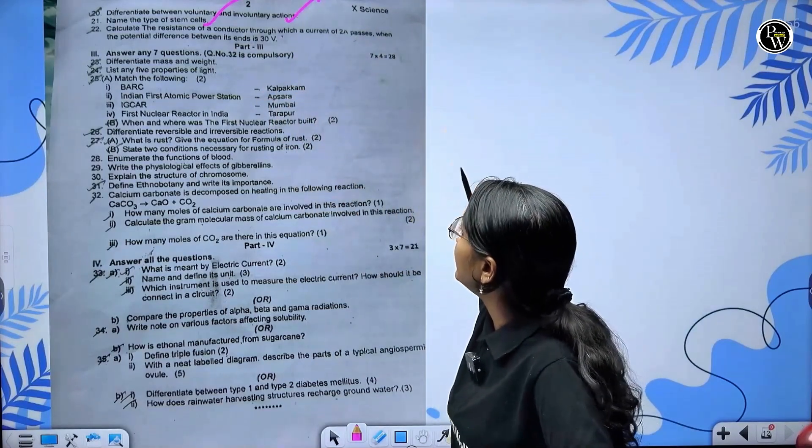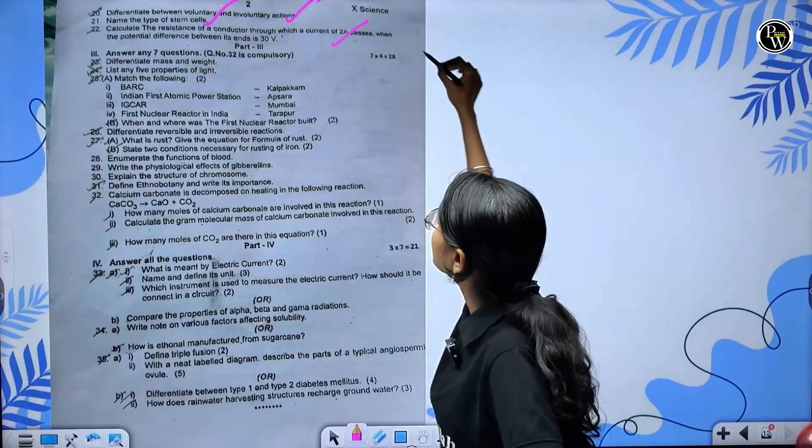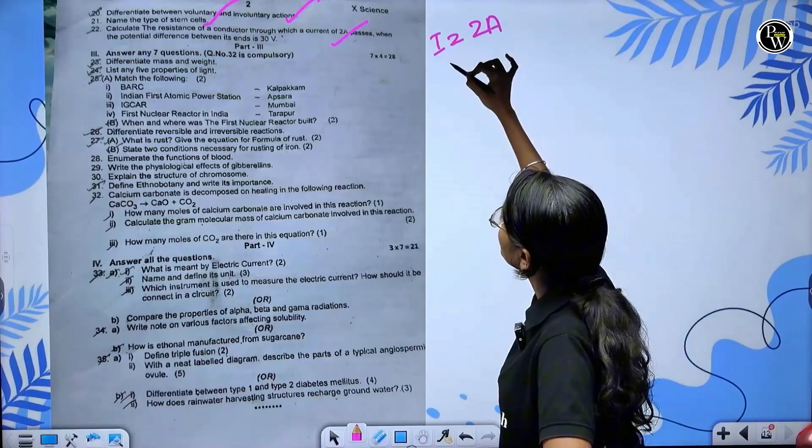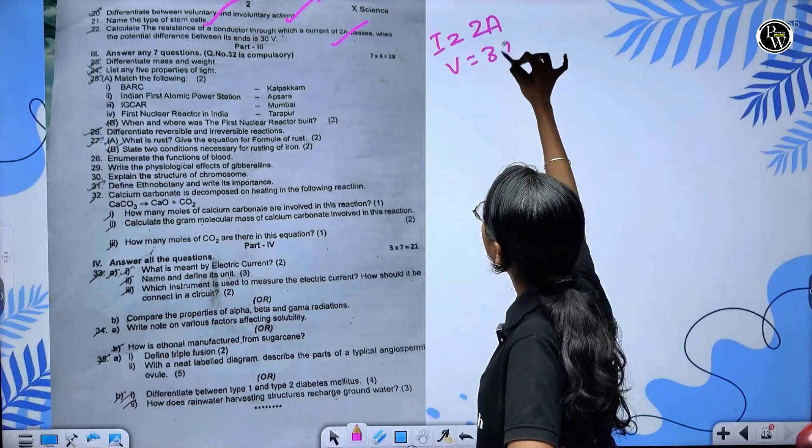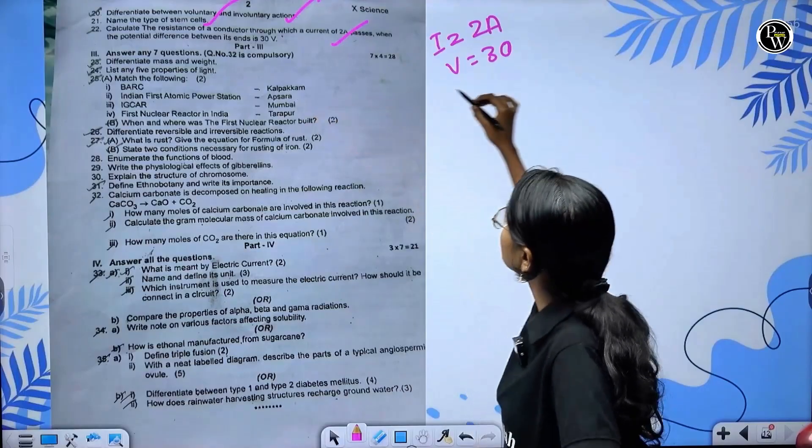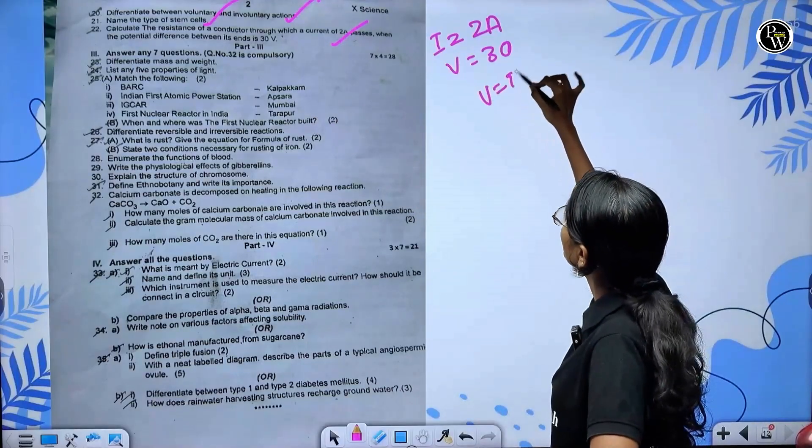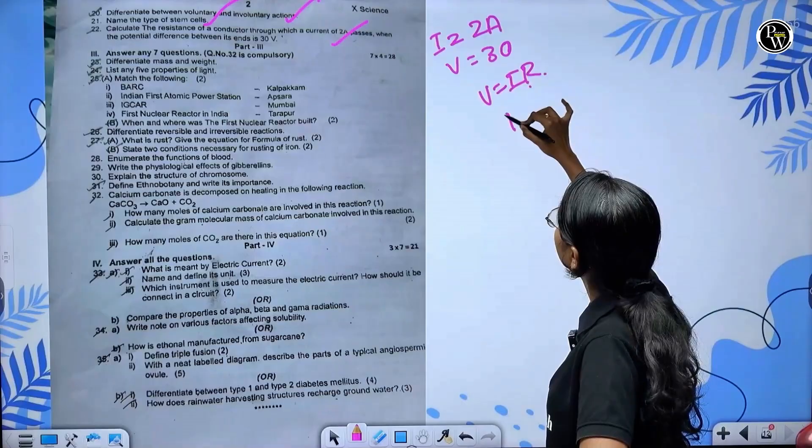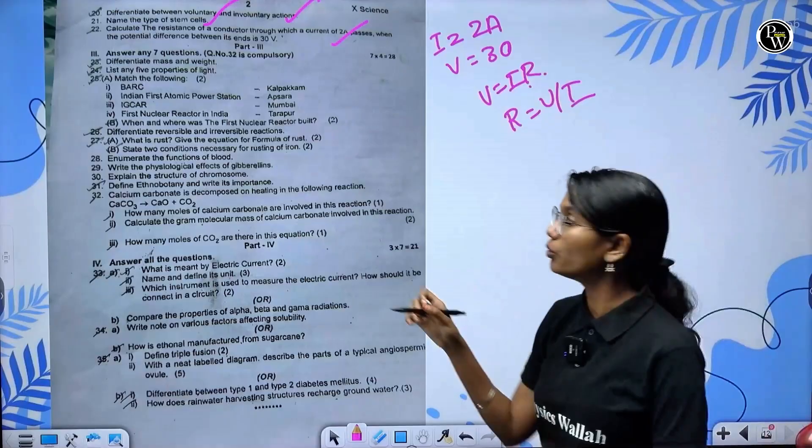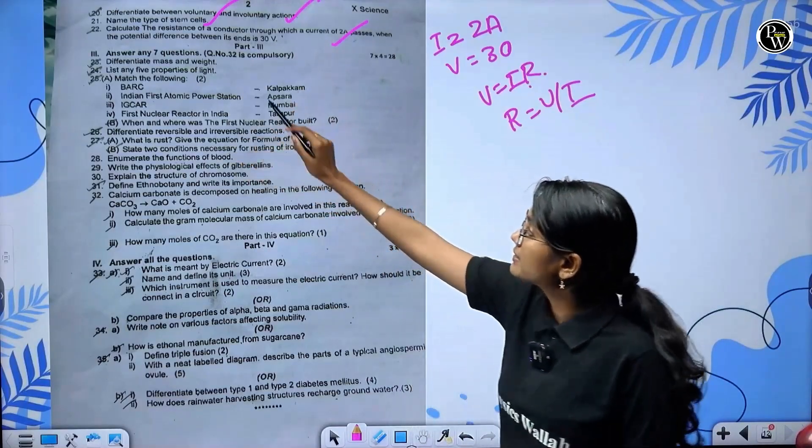Calculate the resistance of a conductor through which current of 2 ampere passes. Current is 2 ampere, potential difference is 30 volts. V equals IR, so R equals V by I. 30 by 2 is equal to 15 ohm - that's your correct answer.